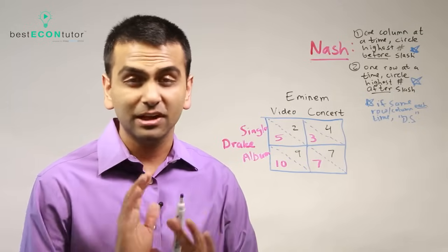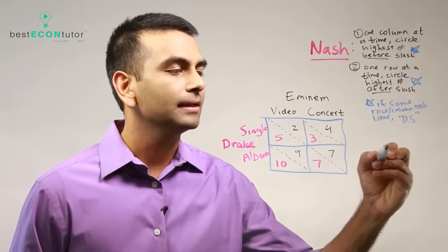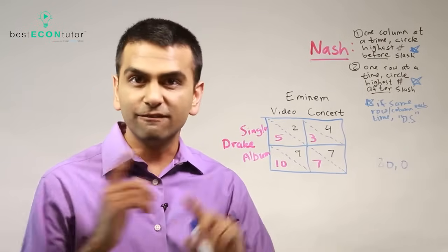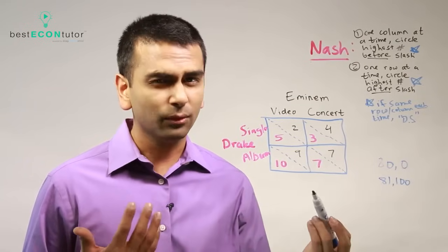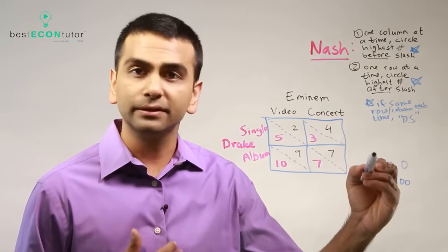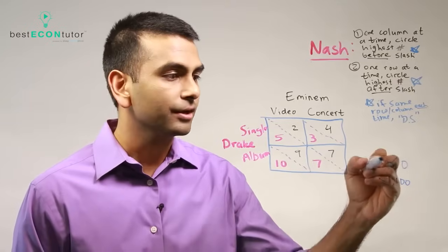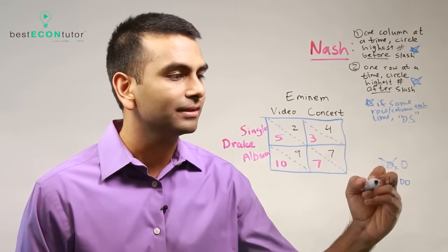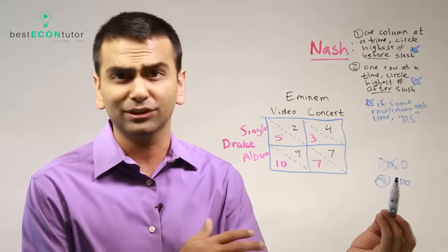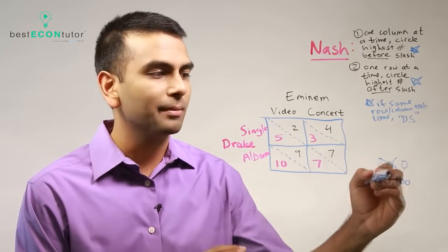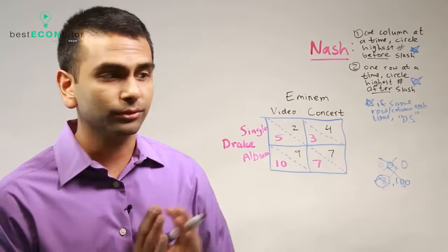You're trying to maximize your own points and you actually don't even care about the other guy. If you have to choose between getting 80 with the other guy getting zero versus getting 81 with the other guy getting a hundred, according to our assumptions of game theory you'd rather get 81 for yourself because you'd rather have that one extra. You don't care about the fact that you're now 19 less than them instead of 80 more. You don't care about the other guy basically.